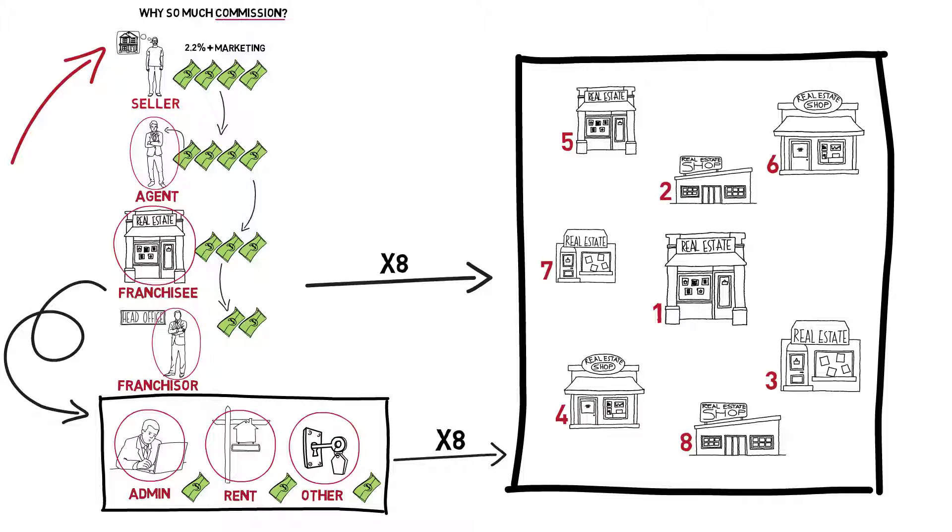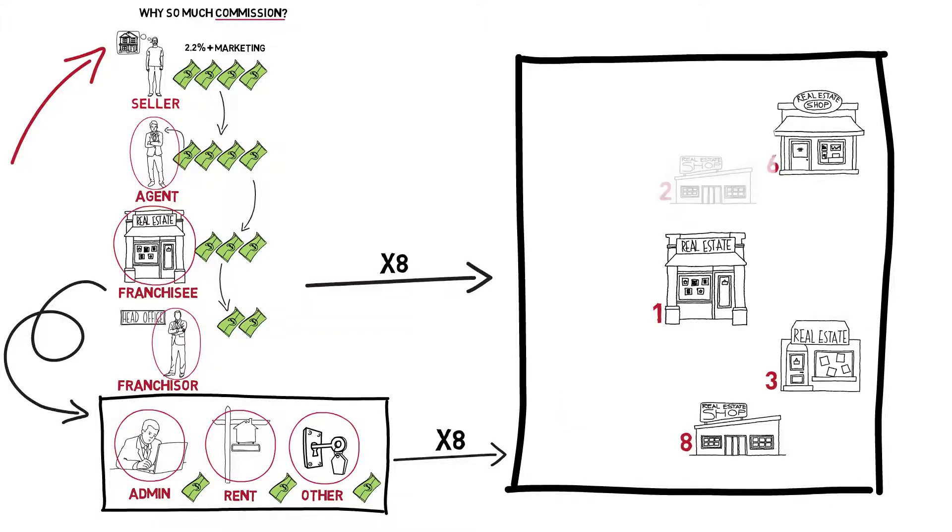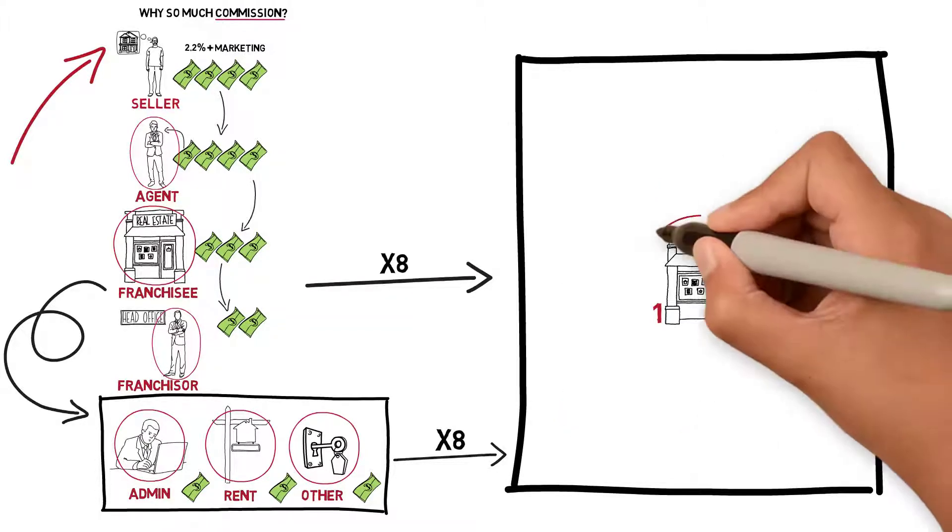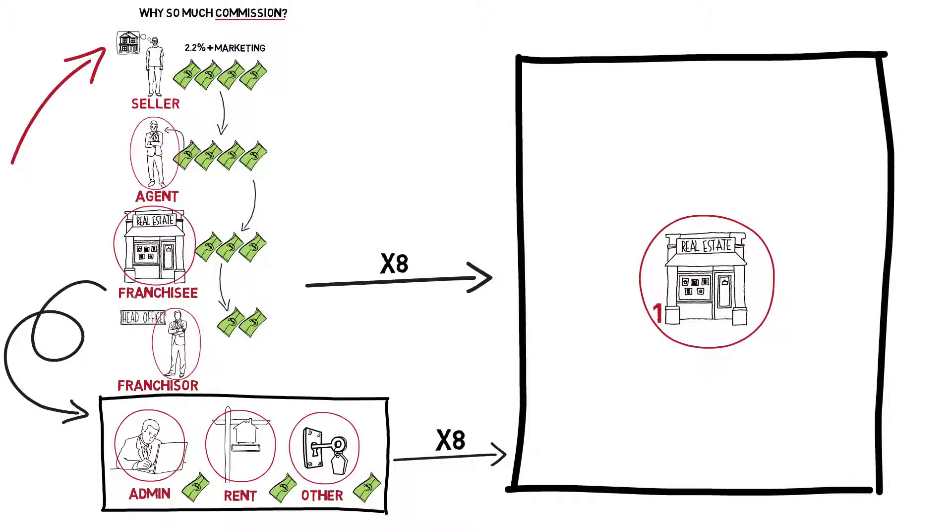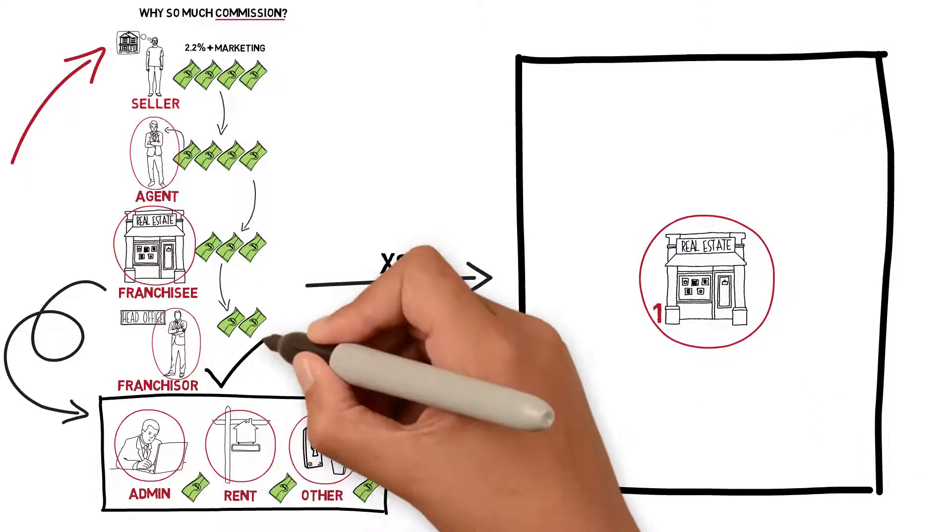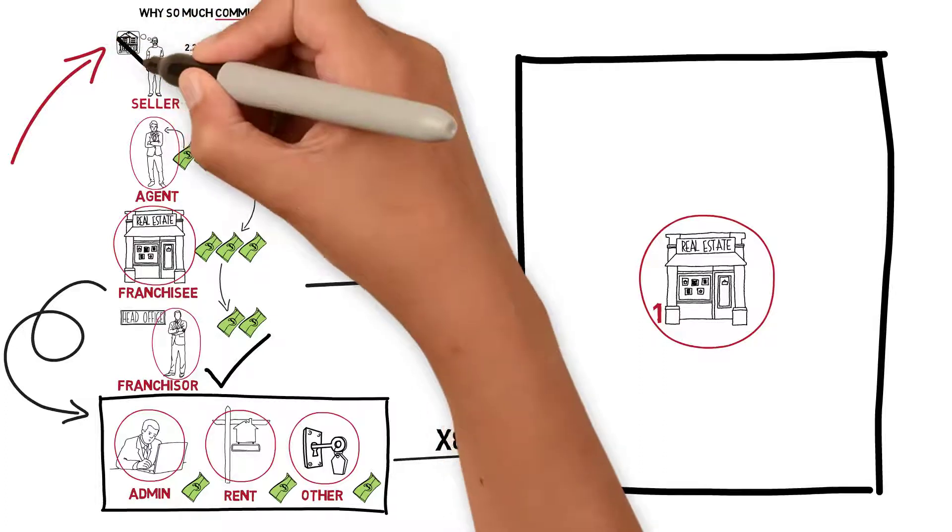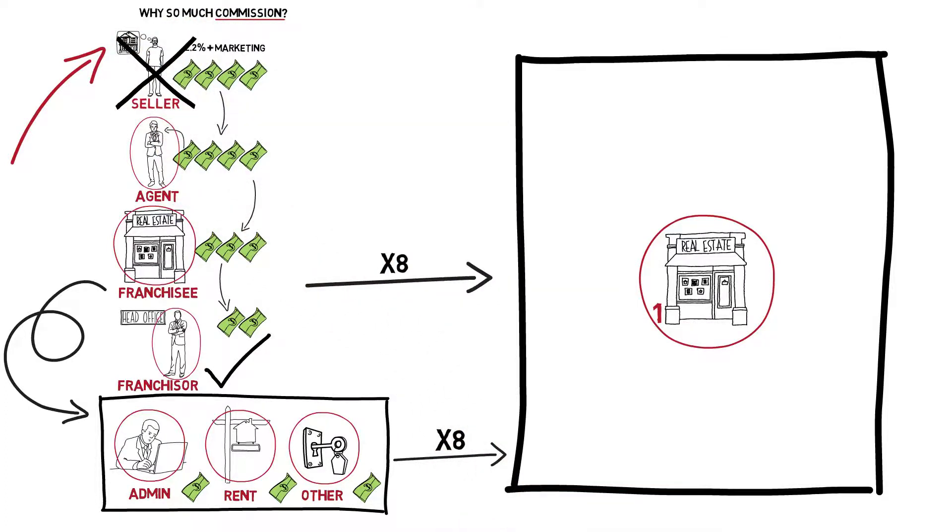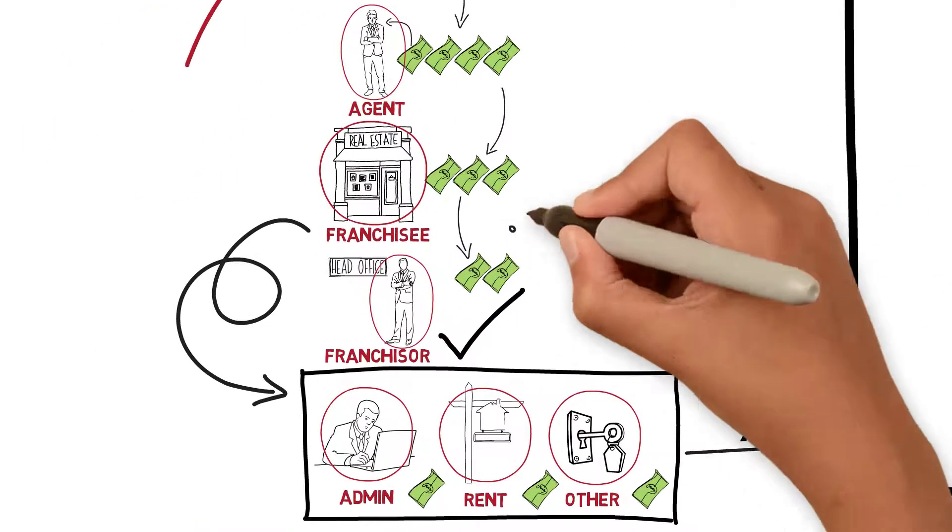That's the problem: the franchise network is set up to benefit the franchisor, not the customer. These people are not all lining up to help you sell your home—they're lining up to take a cut.